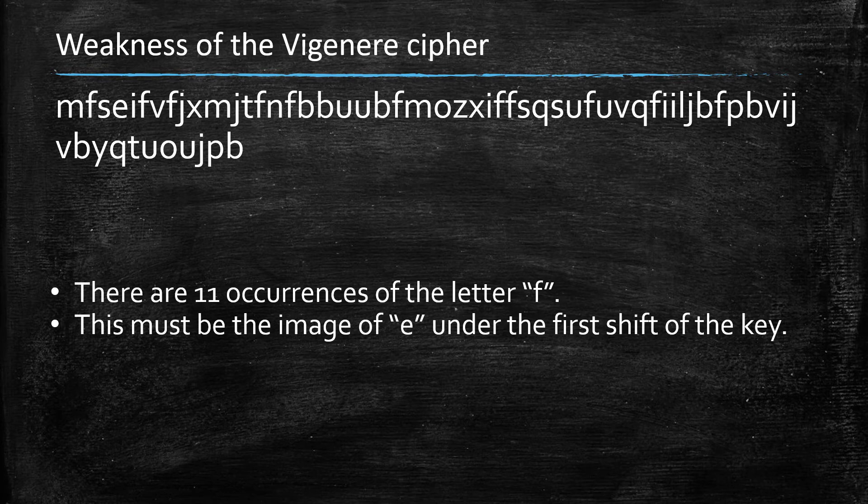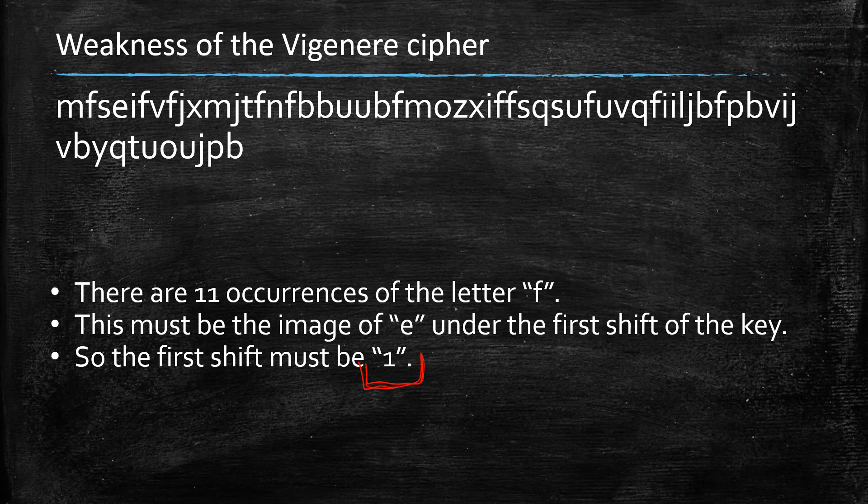And I draw the conclusion that all those letters were shifted by one, because F has to be the image of E under the shift. Like, there is the first shift of the key. So that gives away one-third of the key, which is the first shift, which is one.